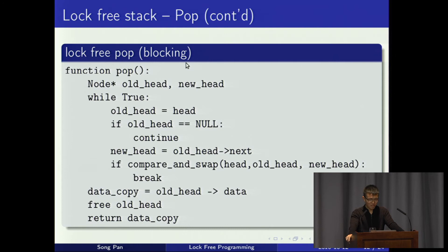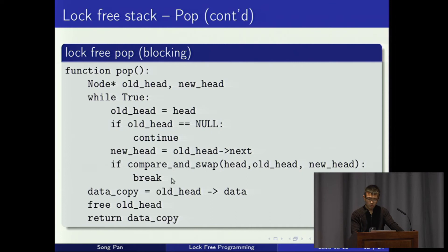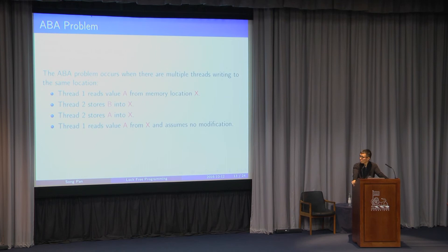This code looks correct but actually has bugs. For example, between the time we check that old_head is not null and the time we dereference it to get its next field, some other thread might have popped that node and freed the memory. When we try to evaluate old_head->next, we'll get a segmentation fault. This will be addressed together with the next problem: the ABA problem.